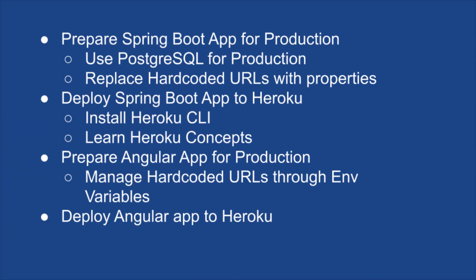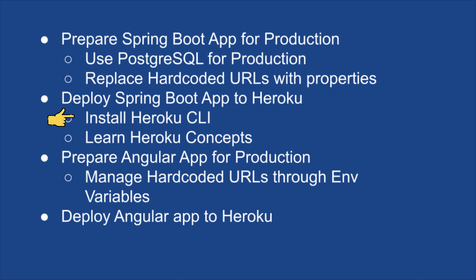I'm going to divide this video into different sections. First of all, we'll start off by preparing our Spring Boot application for production usage. We are going to mainly concentrate on using a PostgreSQL database for the production environment alongside MySQL for local development. We are also going to replace some hard-coded localhost URLs in our Spring Boot application with environment variables. After making these changes, I'm going to show you how to deploy this application to Heroku Cloud Platform, install Heroku CLI, and learn some Heroku concepts when deploying our back-end application. Next, we will prepare our Angular application for production by introducing environment variables to manage the hard-coded back-end URLs and change the startup scripts in the package.json file. And finally, we're going to wrap up by deploying the Angular application to Heroku Cloud Platform.